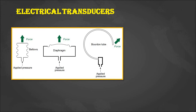The disadvantage of mechanical transducers is that we cannot transfer the output over long distances, nor can we store the output data, unless we convert that output mechanical quantity into another form.